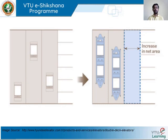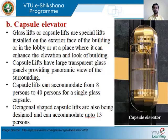Double decker elevators are very suitable for large scale multinational skyscrapers, where public can keep moving from floor to floor. Once you know which floor you need to access, you go to the respective even or odd lobby and access the car to reach your floor quickly.